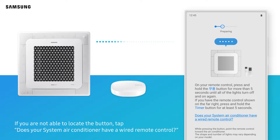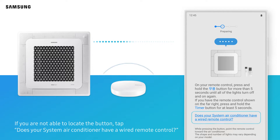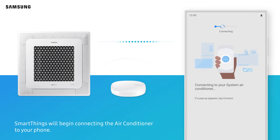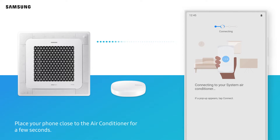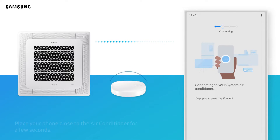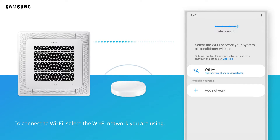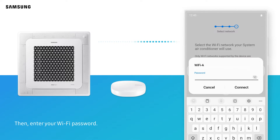If you are not able to locate the button, check whether your system air conditioner has a wired remote control. SmartThings will begin connecting the air conditioner to your phone. Place your phone close to the air conditioner for a few seconds. To connect to Wi-Fi, select the Wi-Fi network you are using, then enter your Wi-Fi password.